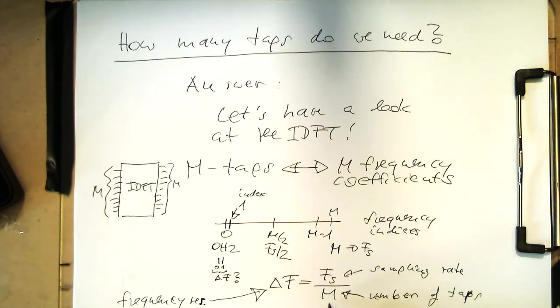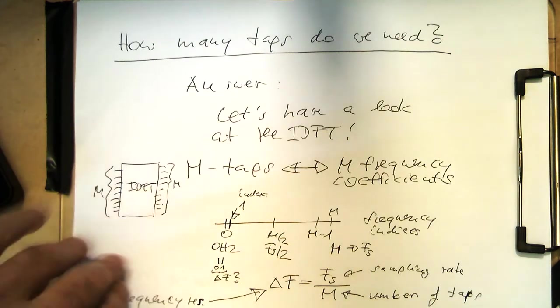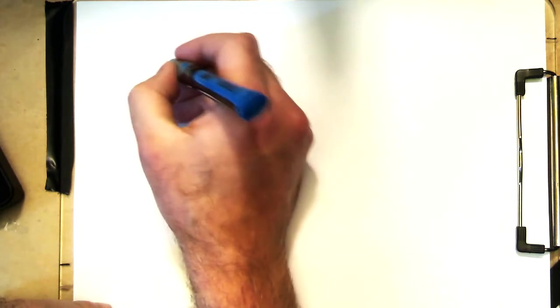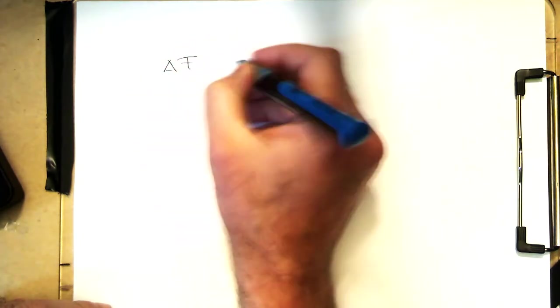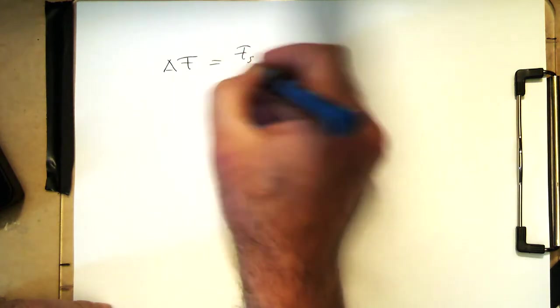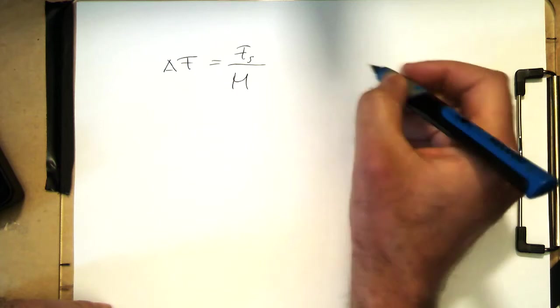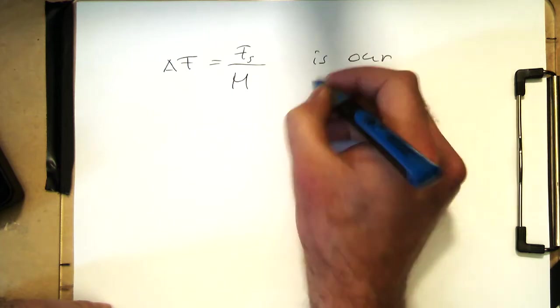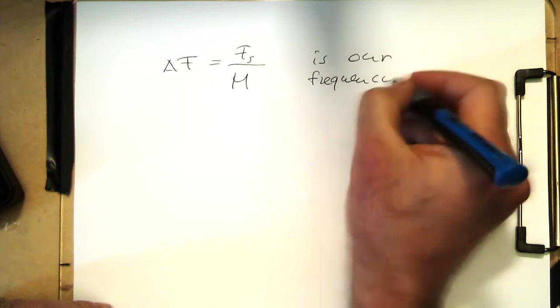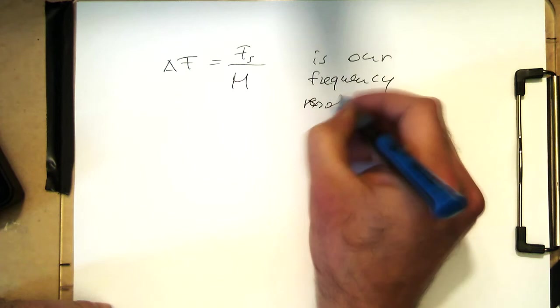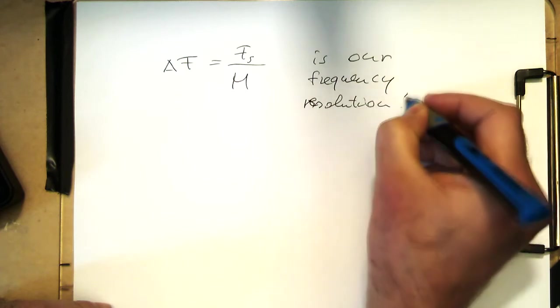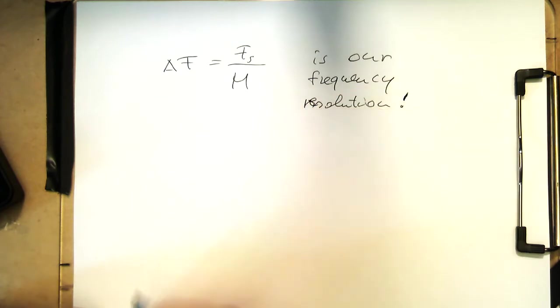So if you have m tabs, we are getting delta f resolution. Simple as that. So therefore, if we design a certain filter with a certain transition width, we need to be careful that this is within these boundaries. So delta f, fs divided by m, is our frequency resolution. It can't get better.